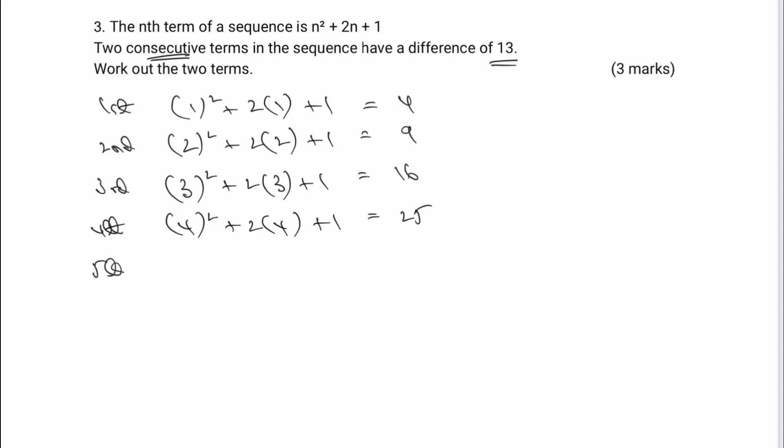The fifth term is going to be 5 squared plus 2 times 5 plus 1. And that's going to equal 36.